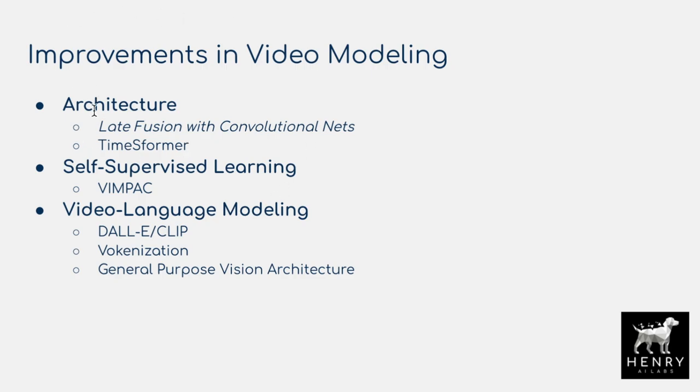We have some architectural advancements that have been helping with this. One of the earliest ideas was late fusion with convolutional networks, where you process grouped clusters — say the first three frames and the next three frames — and then fuse the features after eight layers of convolutional processing. Now we have the TimeSformer, where attention alternates between the time axis and the spatial window going through the feature map.